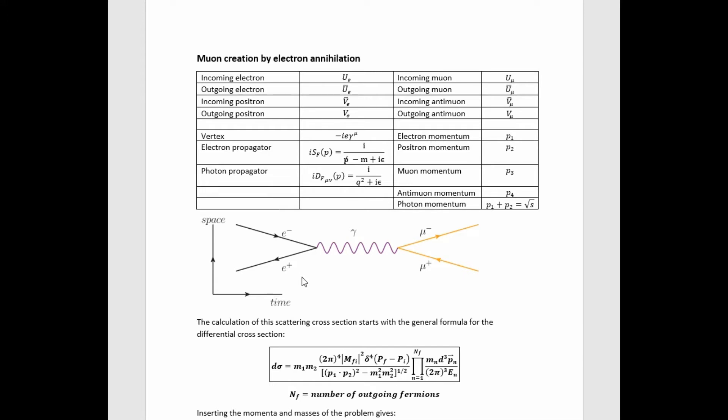Here we have the Feynman diagram for the tree-level process that we're calculating the cross-section for here. We've got a positron and an electron annihilating, and presumably they have a lot of energy because they can create a pair of much more massive particles.